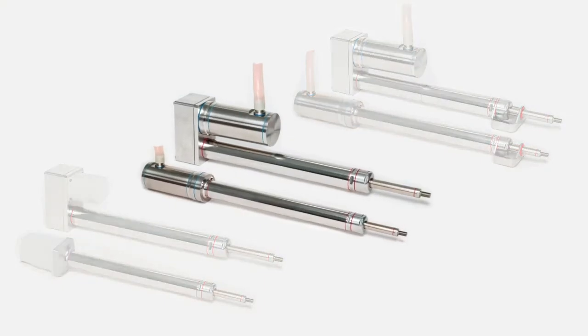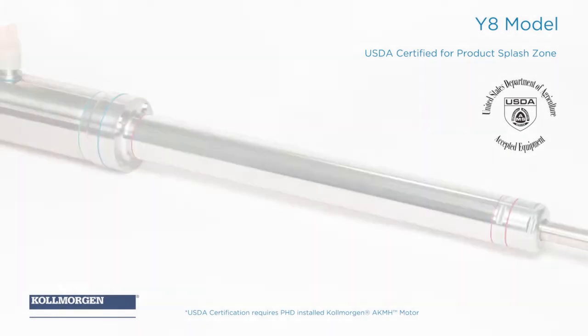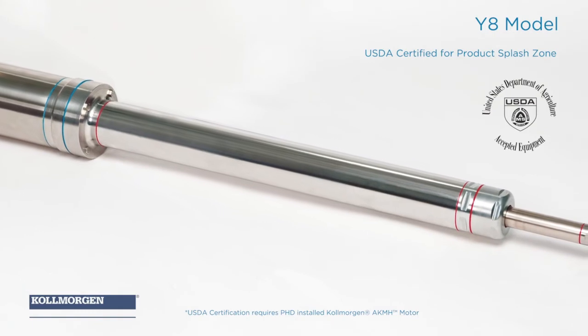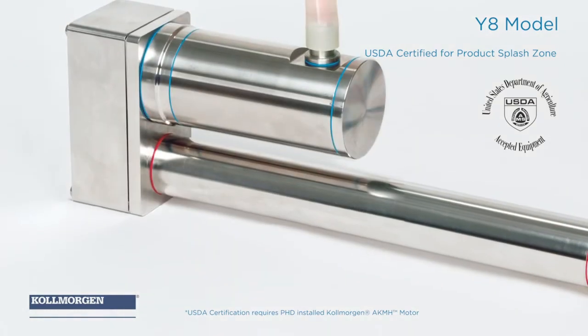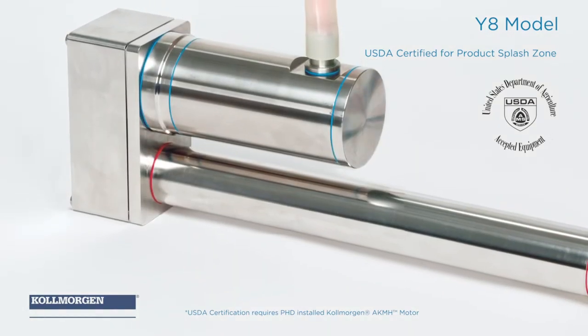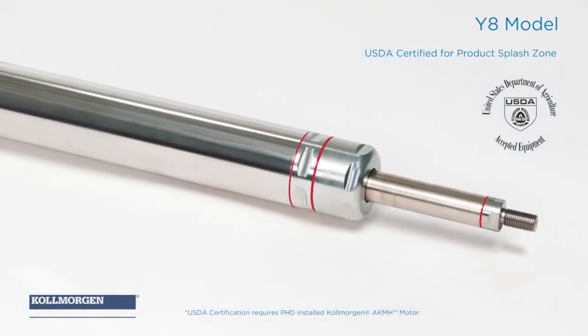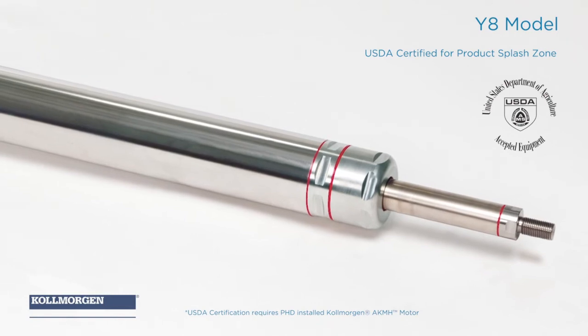The second option is the Y8 model. Similar to the base model, the Y8 Series ECP Electric IP69K Cylinder is USDA certified with a Kollmorgen AK-MH motor installed by PHD. This model is specialized for food processing industry splash zones and caustic washdown applications.